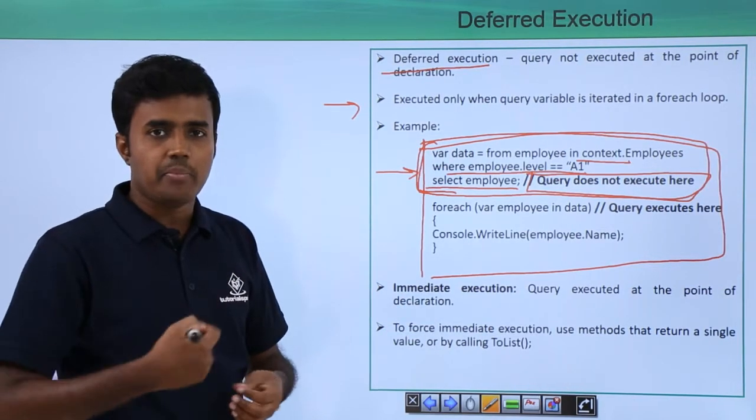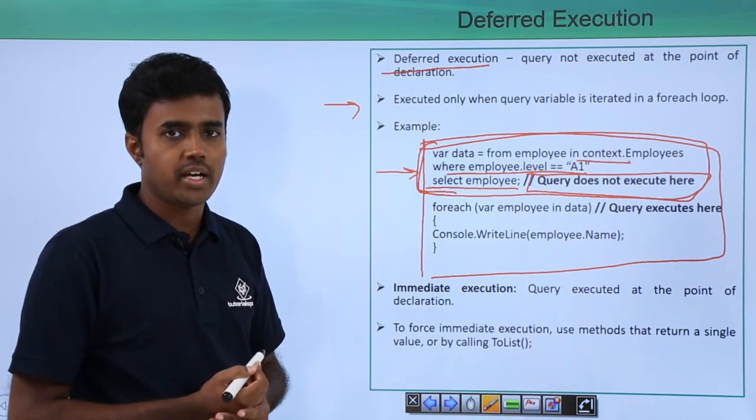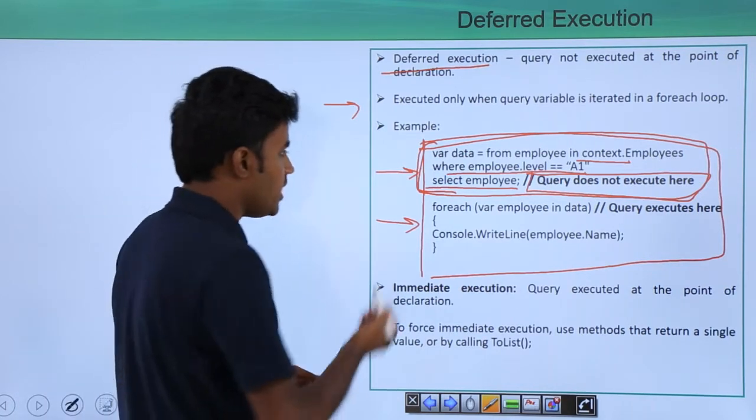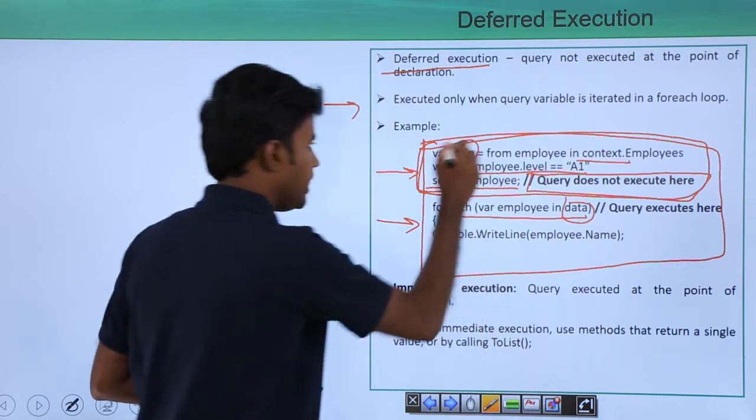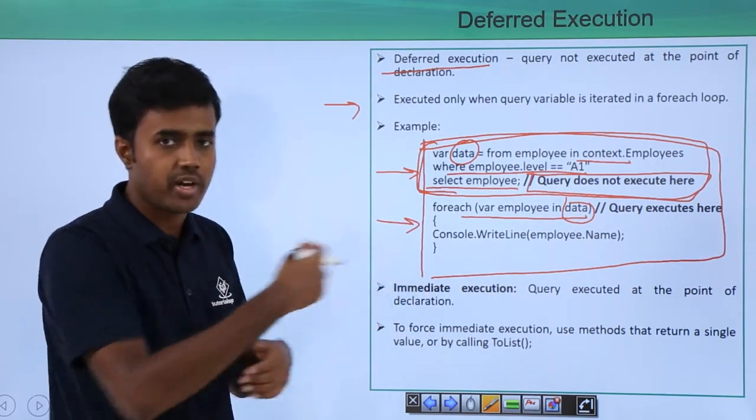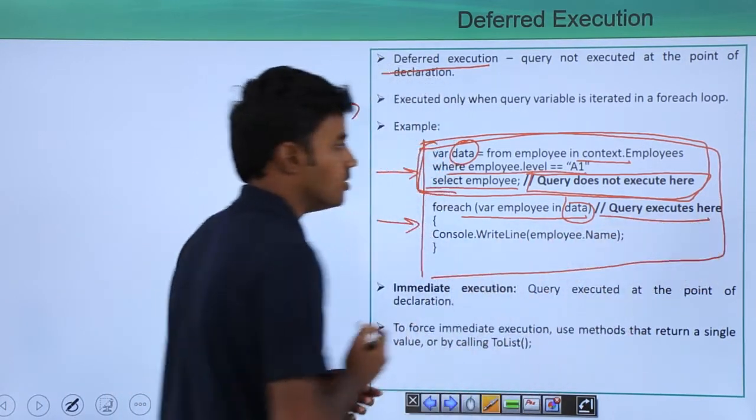There may come a point where you actually iterate through the data in the query. That is this point, the foreach loop. When you iterate through the data, when you are iterating through the elements which are defined by the query, only then your query will execute.